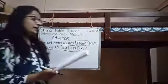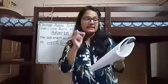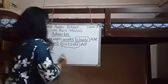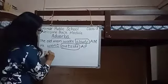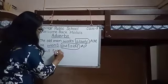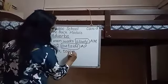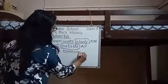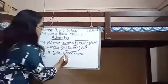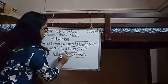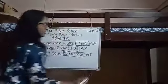Adverb of time — it tells us when an action is done. For example: I will talk tomorrow. 'Talk' is the verb. When will you talk? Tomorrow. So when this action is going to happen — tomorrow — it becomes the adverb of time.